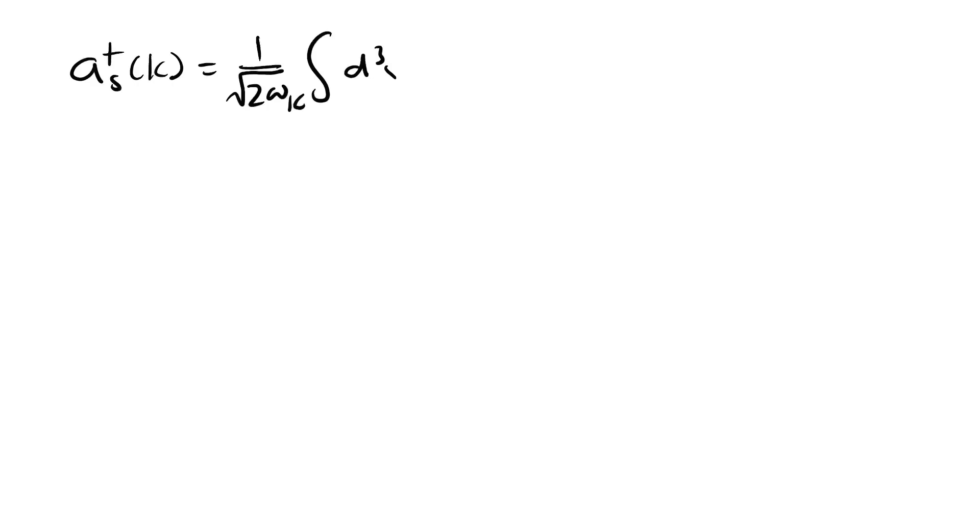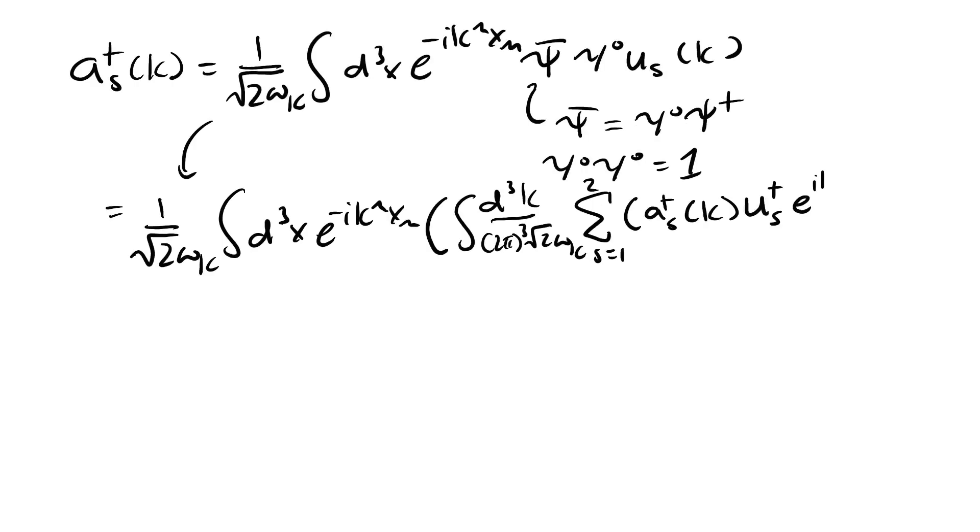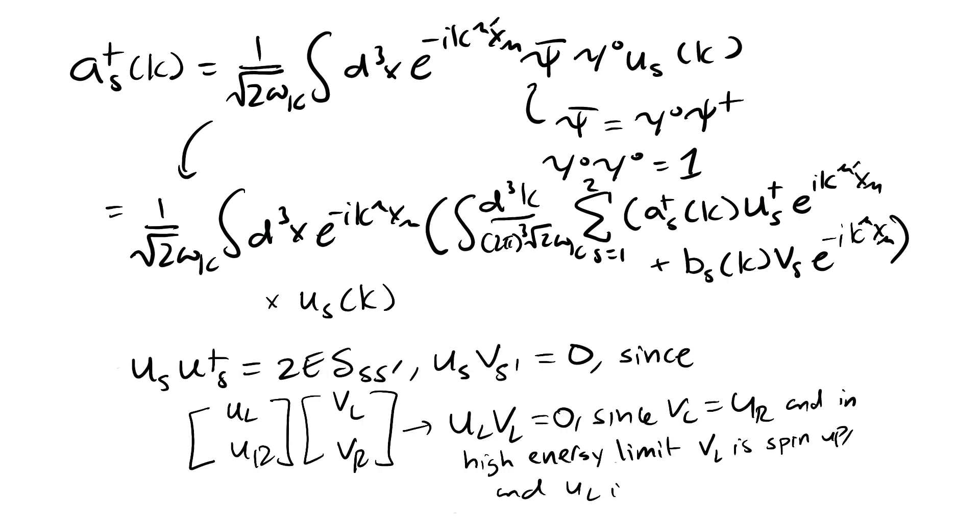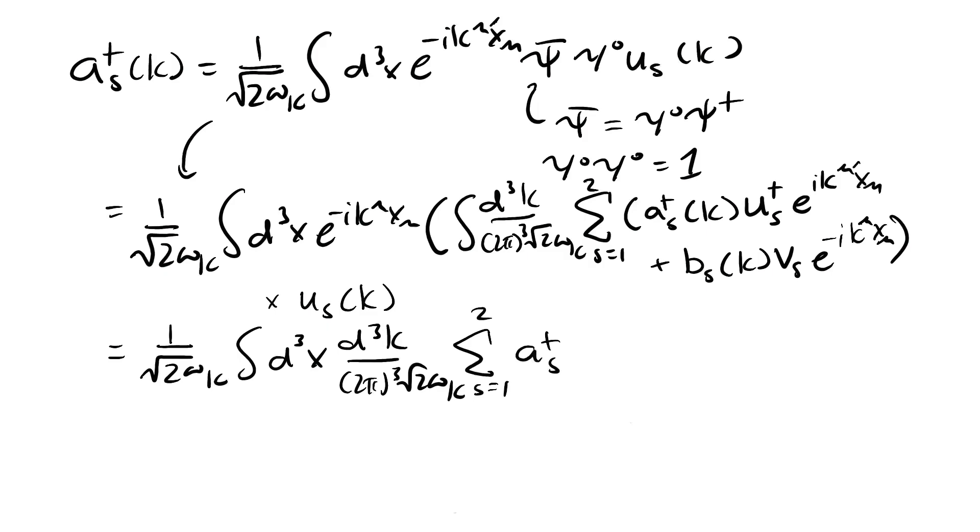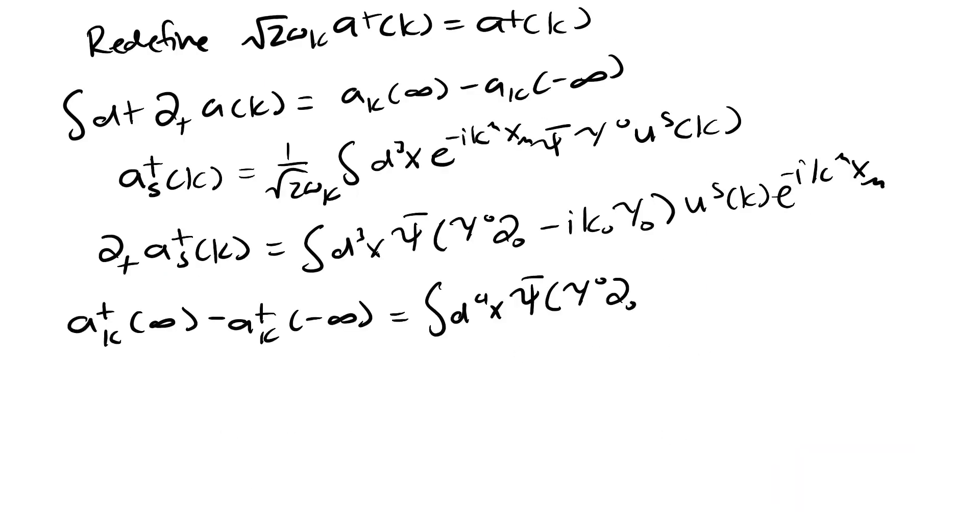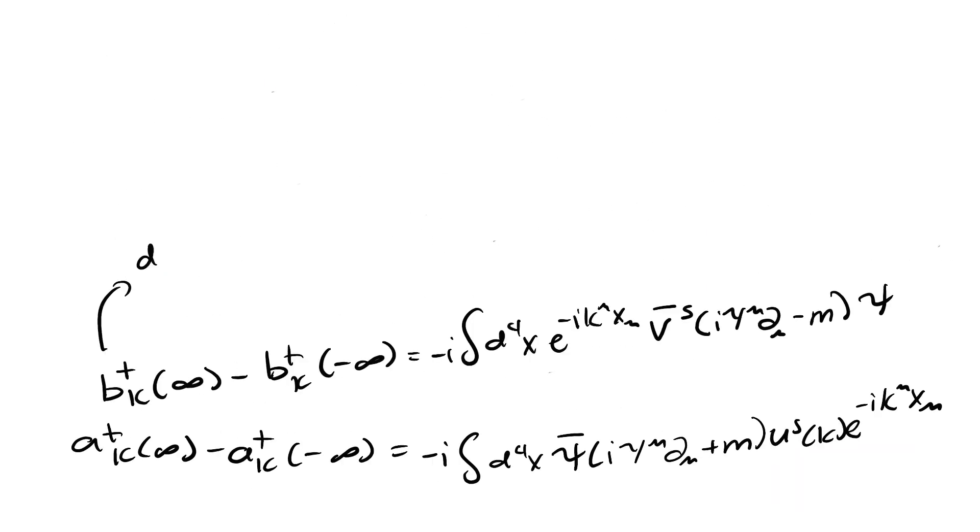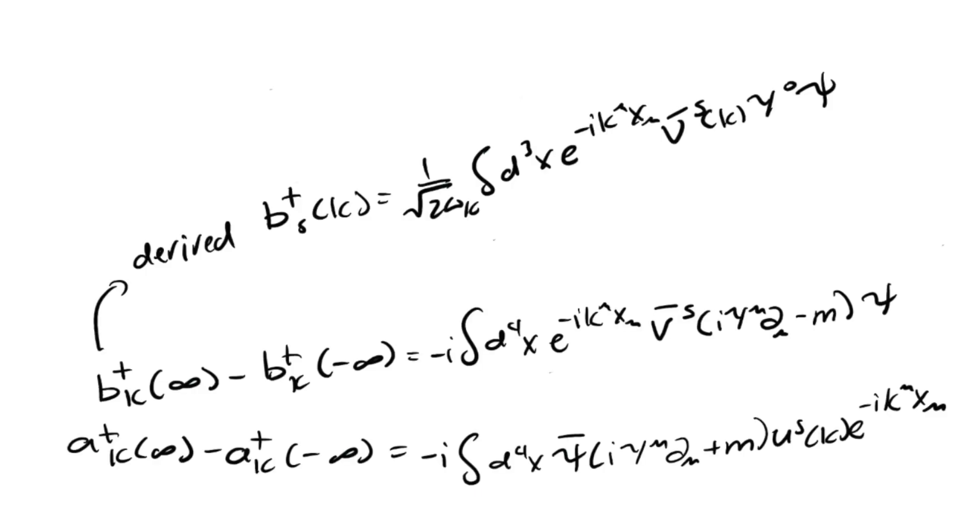The proper thing to calculate is the probability an electron and positron go in and out. We can write the creation operator like this. We can prove this explicitly by calculating this integral and using the inner product of spinors. Doing some more math tricks, we get these equations over here.